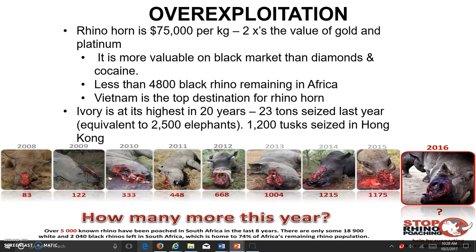In 2012, 28 tigers were killed by poachers in India; the most was 46 tigers in 2005. We have tigers being killed and illegally traded for parts of their bodies. In 2012, 27 elephants were poached in Africa — it's still an ongoing problem. As far as elephants are concerned, ivory is currently at its highest price in the past 20 years. 23 tons of ivory were seized just last year — that's the equivalent of about 2,500 elephants — and 1,200 tusks were seized in Hong Kong alone for being illegally traded.